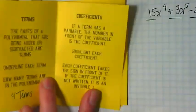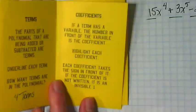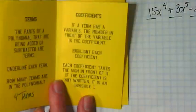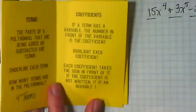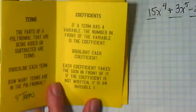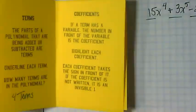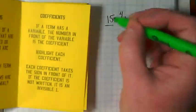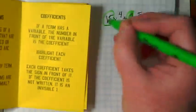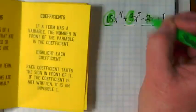I'm sorry, couldn't see the way I wrote that down there. Page two. If a term has a variable, the number in front of the variable is the coefficient. This says to highlight each coefficient. And I did not ask you guys to get a highlighter, but if you have one nearby, that's great. If not, you can do it after.